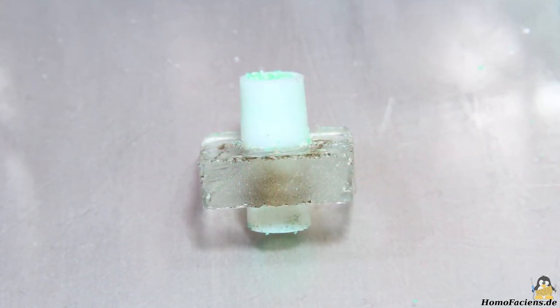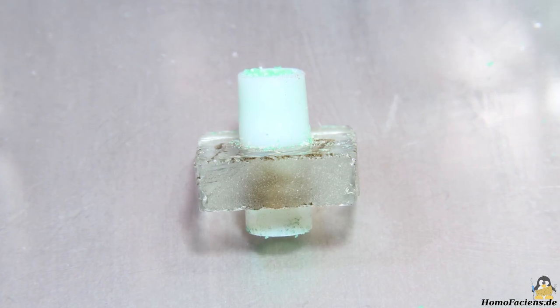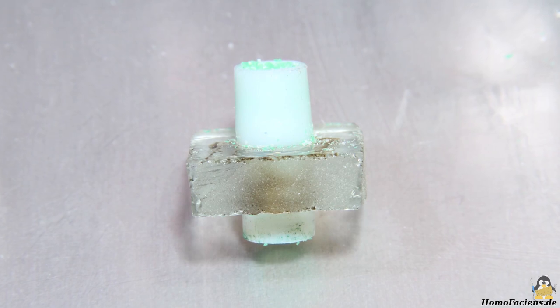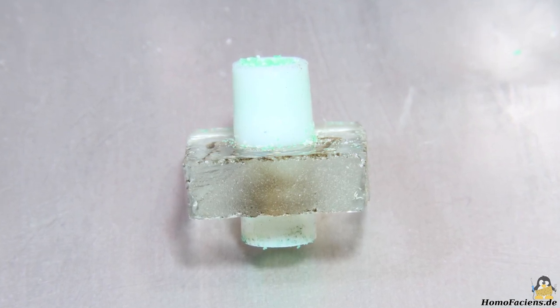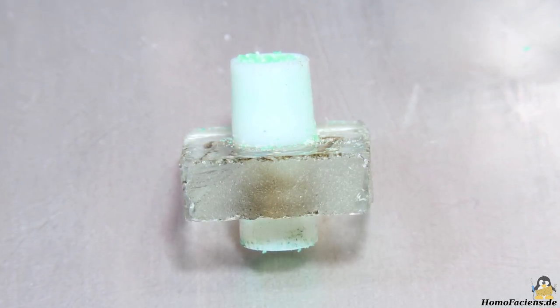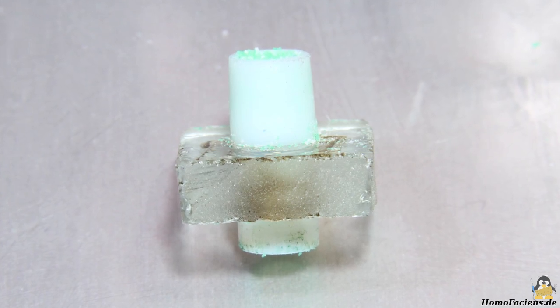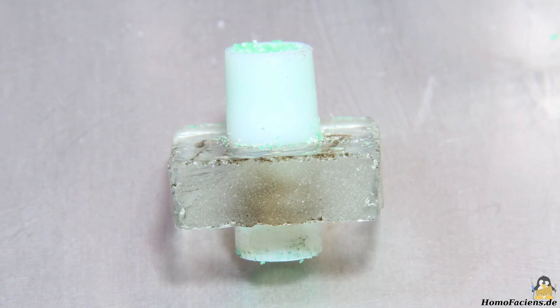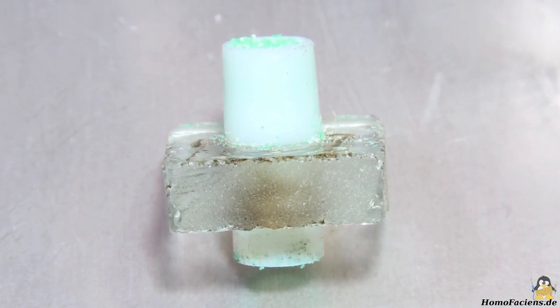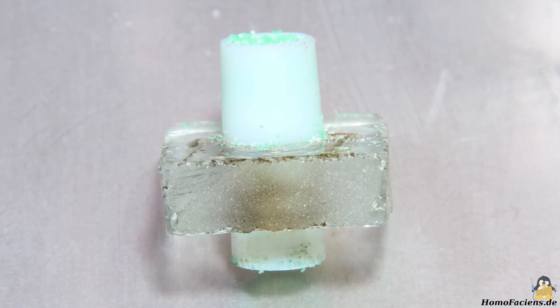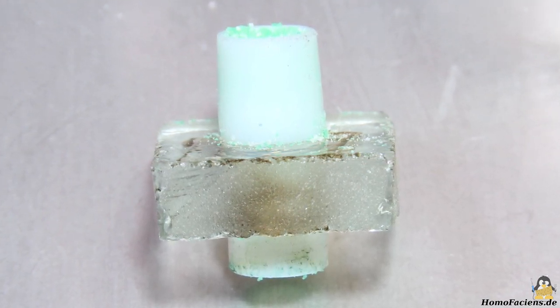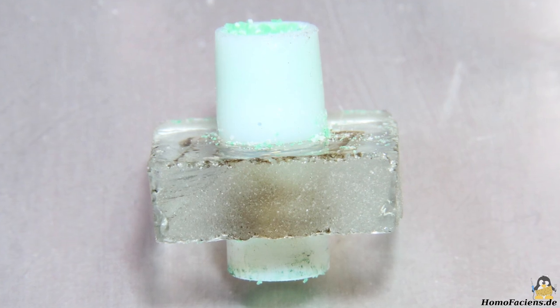A closer look at the Teflon tube shows that it has widened a bit towards the bottom. I have drilled the hole in the cold end with a 10mm drill, but the Teflon tube has an outer diameter of only about 9.5mm. The heated Teflon has expanded somewhat in the lower area. The now slightly conical shape makes it easier to convey the granulate downwards.